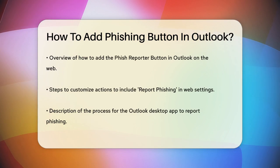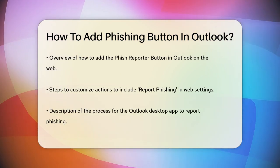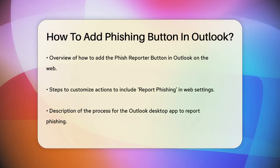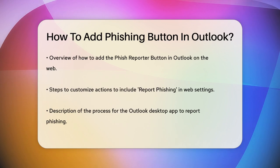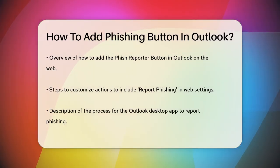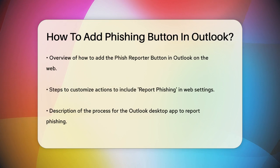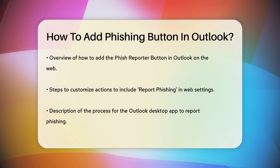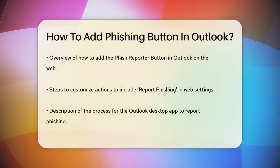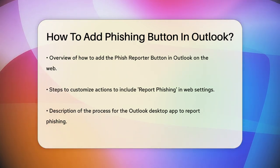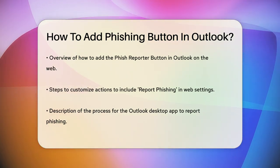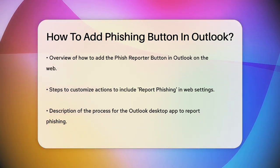Once the add-in is installed, you'll see a new option in your Outlook menu. If you're using Outlook on the web, you can also add the phish reporter button directly from your settings. To do this, click on the ellipsis More Actions within a message, select Customize Actions, and then choose Report Phishing. This will make the phish reporter button appear in your messages.